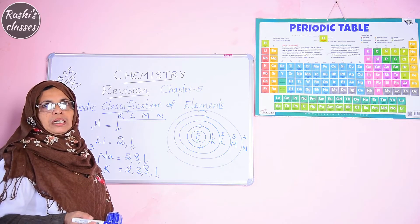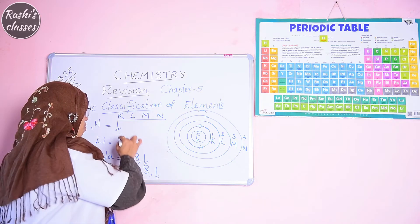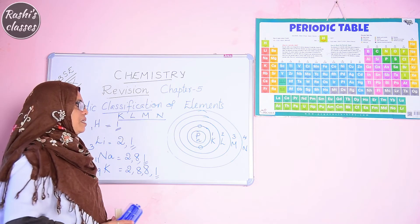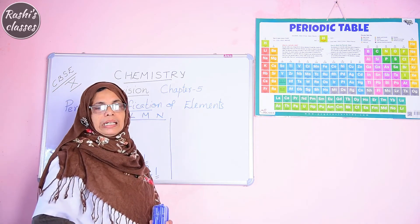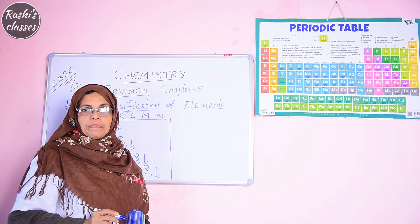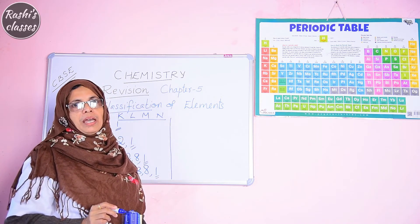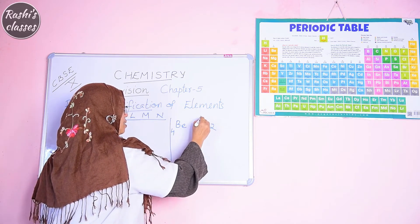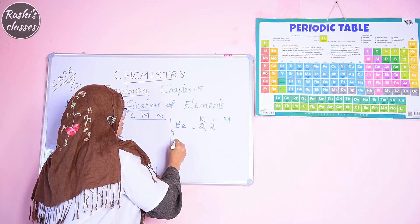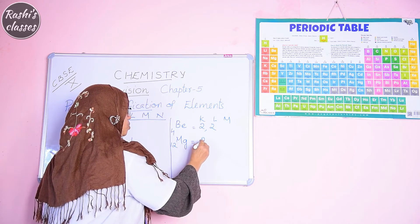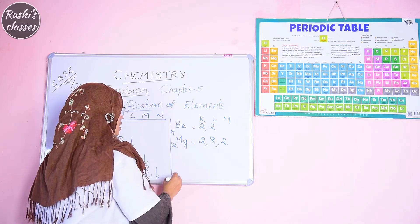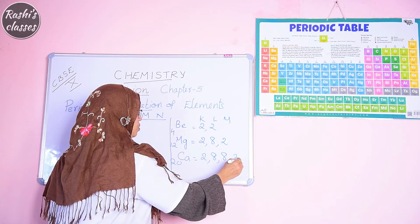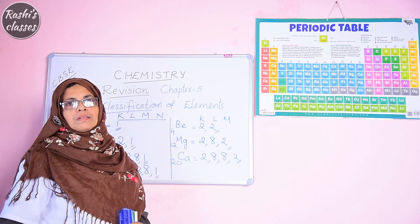The valence electron is the outermost electron — and for first group elements, there is 1 valence electron. For second group elements — the alkaline earth metals: beryllium, magnesium, calcium, strontium, barium, and radium — beryllium (atomic number 4) is 2, 2; magnesium (atomic number 12) is 2, 8, 2; calcium (atomic number 20) is 2, 8, 8, 2. So in the second group, valence electrons are 2. These valence electrons decide their chemical properties.